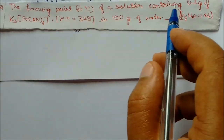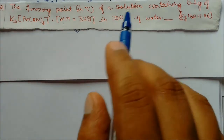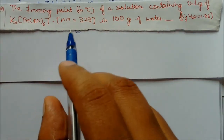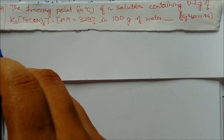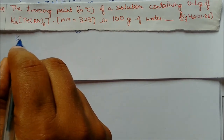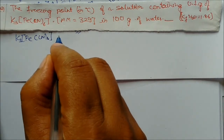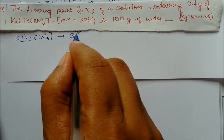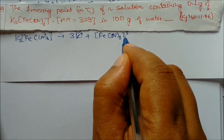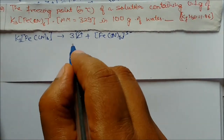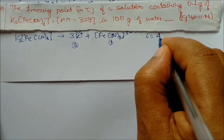Next question: find the freezing point in degree centigrade of a solution containing 0.1 grams of K₃[Fe(CN)₆] in 100 grams of water. Kf of water is given. This is a complex salt. When dissolved in water, K₃[Fe(CN)₆] dissociates into 3 K⁺ ions and one [Fe(CN)₆]³⁻ ion, giving 4 total ions, so van't Hoff factor i = 4.